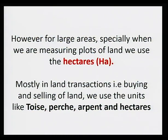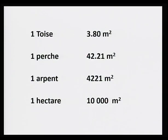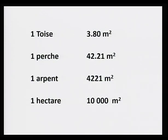Let's see the connection between the terms twas, pairs, arpa, and hectares with meters squared. In one twas, we have 3.8 meters squared. In one pair, we have 42.21 meters squared. In one arpa, we have 4,221 meters squared. And in one hectare, we have 10,000 meters squared.